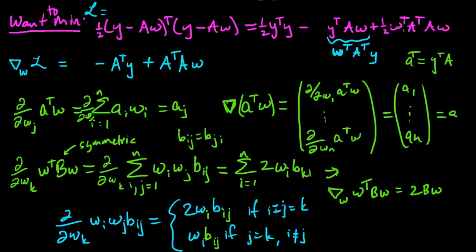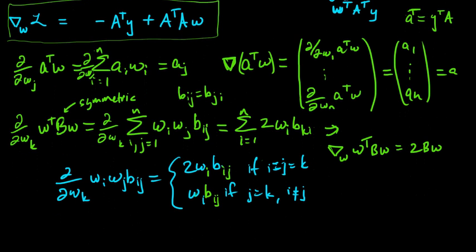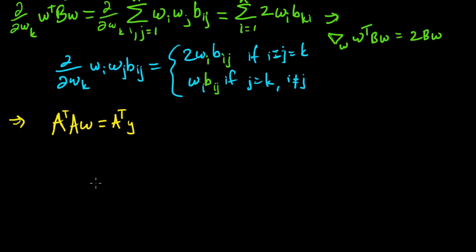So that means we take the gradient of this guy with respect to w, we get, so the 2 cancels the 1 half, and we just get A transpose Aw, and that's this. So that's the gradient. And now we want to set that, so we want to get the minimum of this function, this is a function of w. So let's set that gradient equal to zero. If we set the gradient equal to zero, if that equals zero, then we get A transpose Aw equals A transpose y.